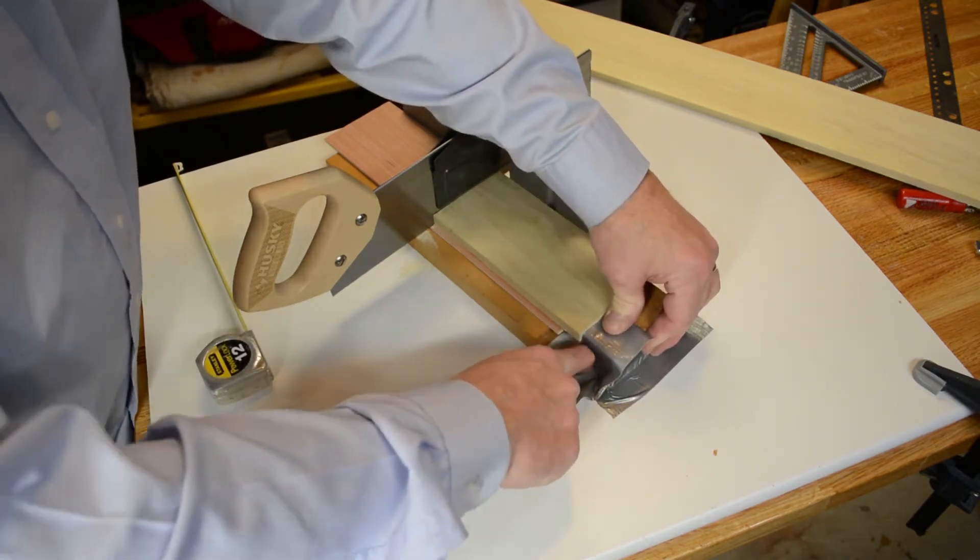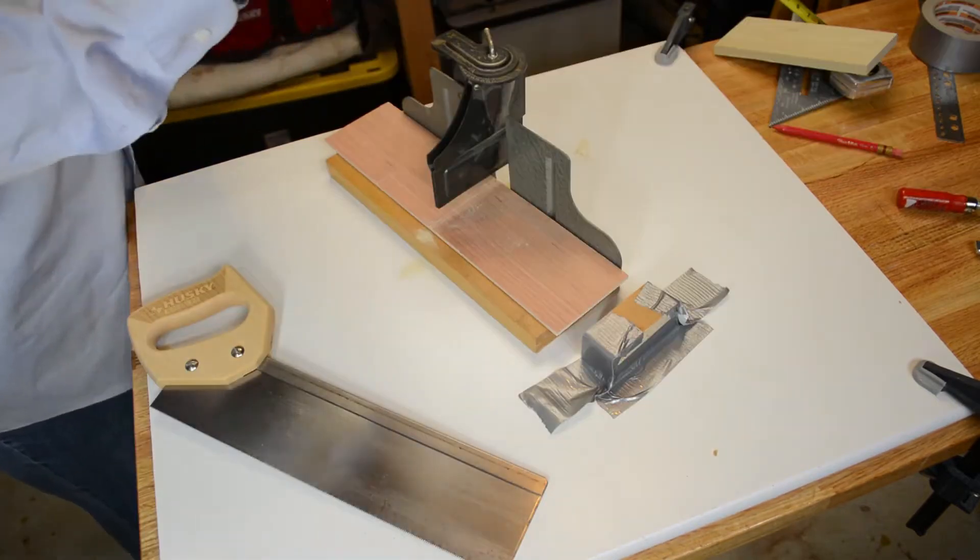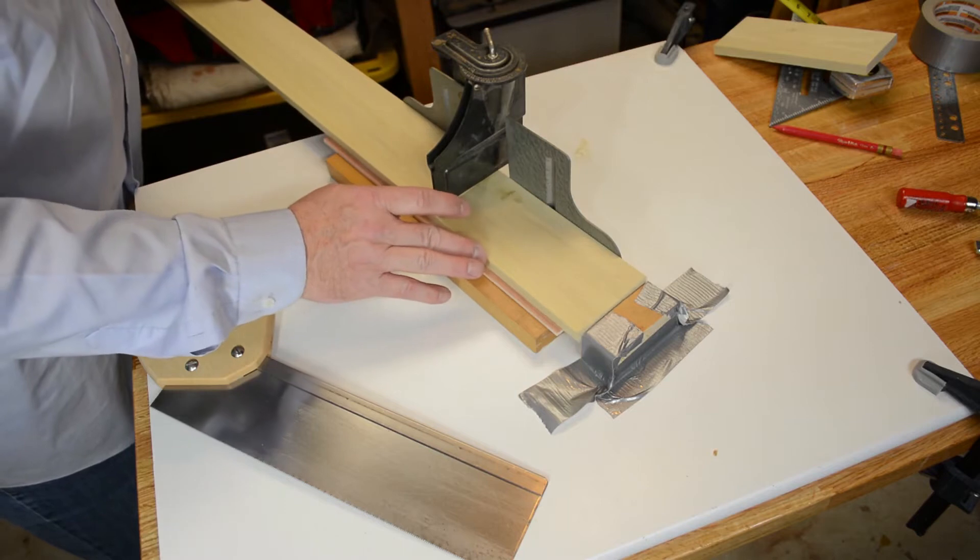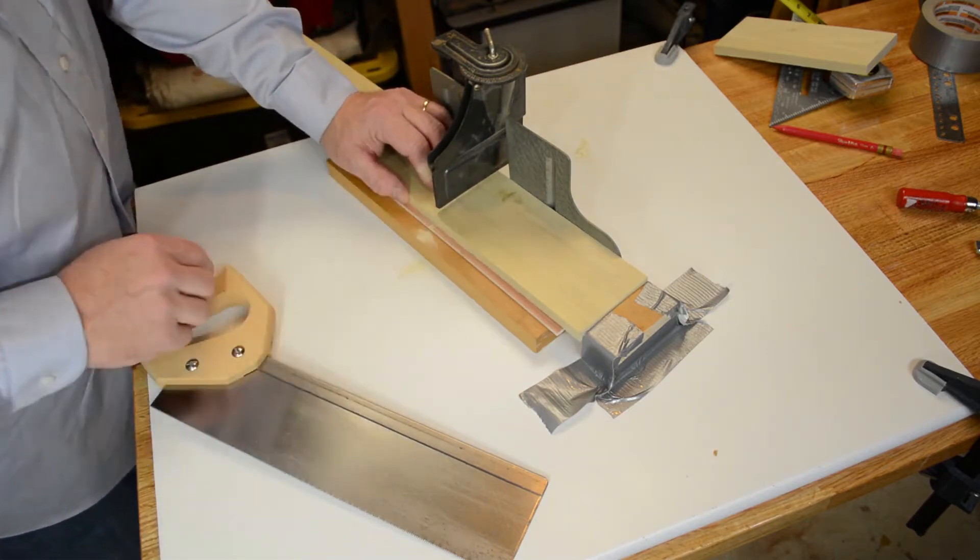Now in fact, my miter saw is actually screwed down to the work surface too, so that it doesn't move around too much. But once I have my stop block in place, the next cut that I make is going to be exactly the same as the first piece.